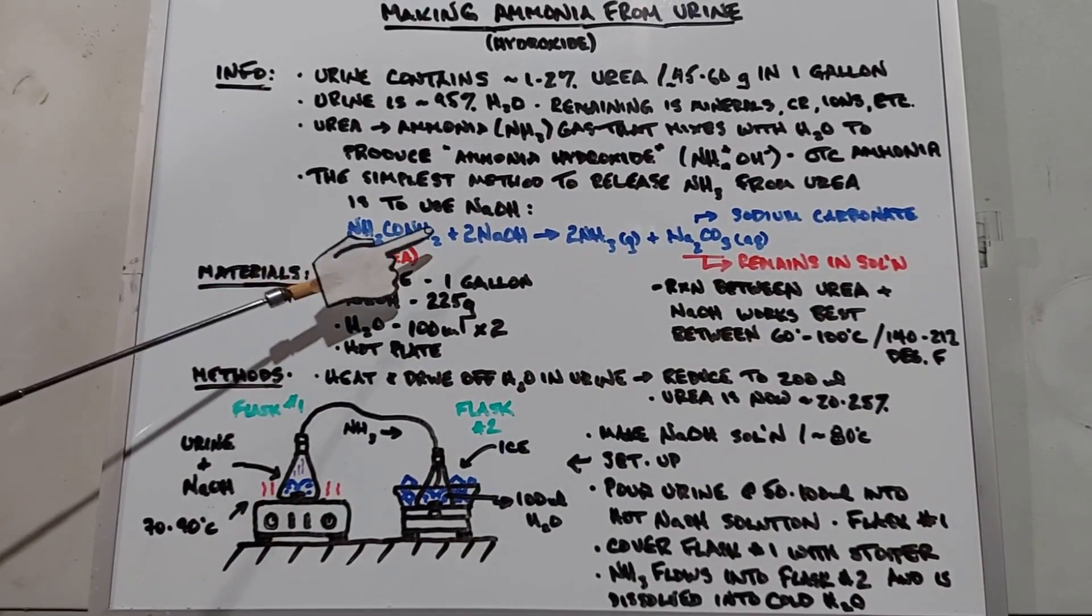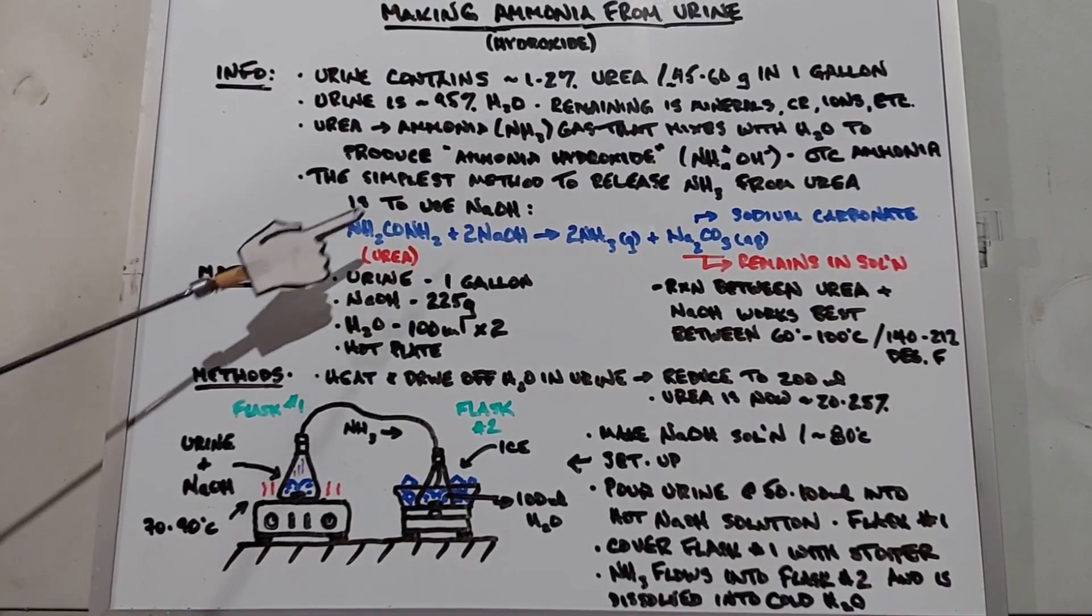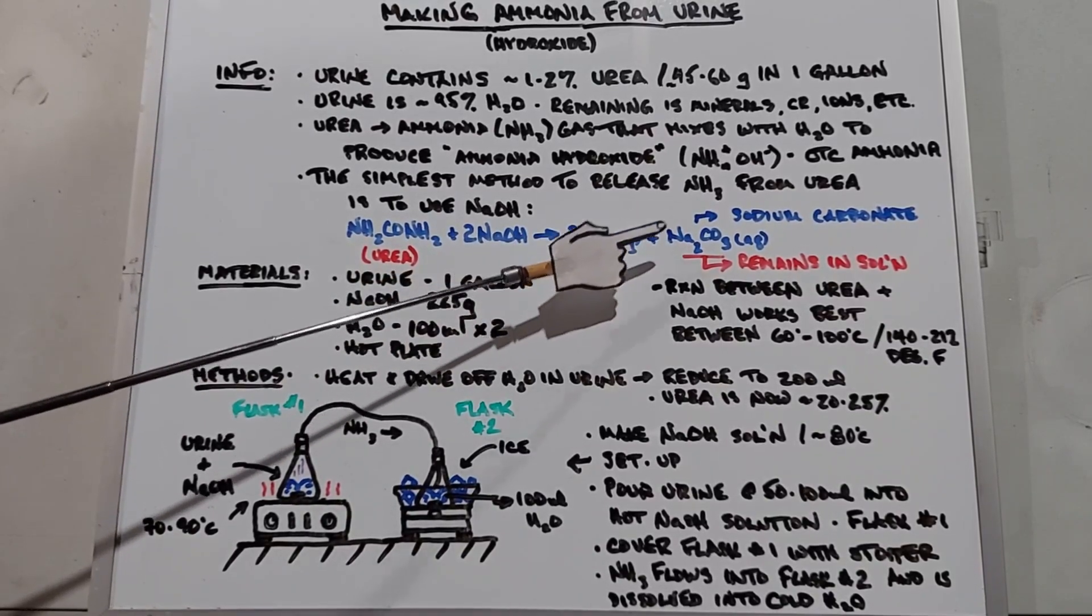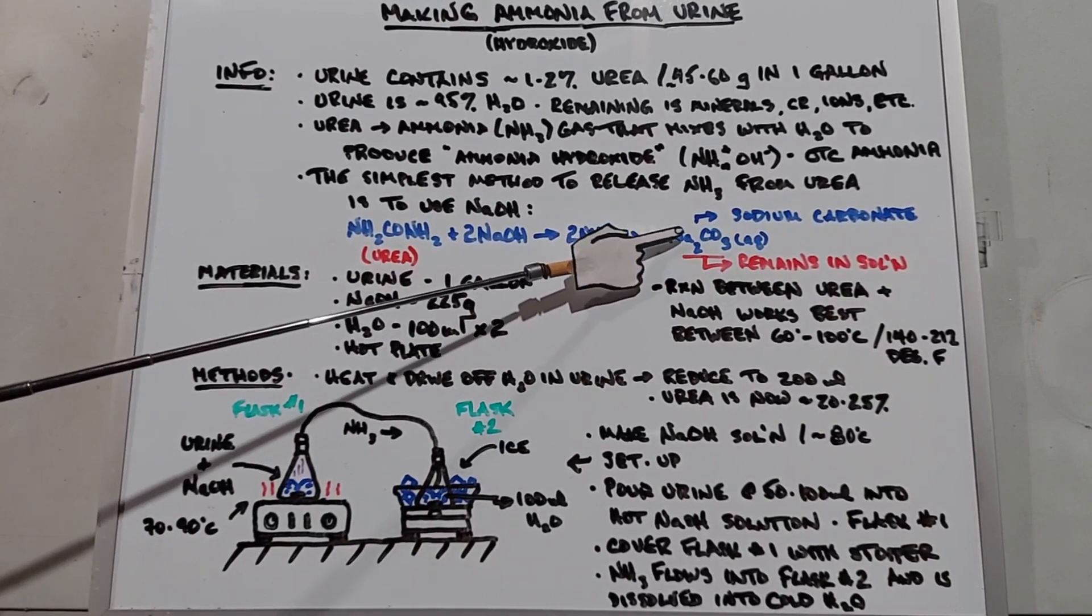NH2CONH2, which is urea, you can already see on both sides of the carbon and oxygen you have what is akin to ammonia molecules, plus 2NaOH yields 2NH3 gas plus Na2CO3 which is sodium carbonate.